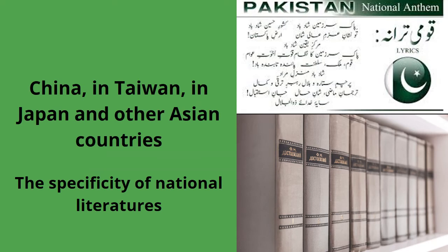But at the same time, this discipline appeared in the Third World — in Asian countries like China, Taiwan, Japan, and other Asian countries. What they did was work that was actually about the specificity of national literatures. They compared the national literatures of these countries and the literature particularly associated with specific nations. So they started that kind of comparison, and it was definitely a form of comparative literature.